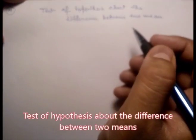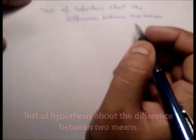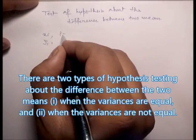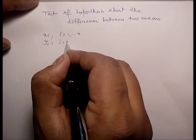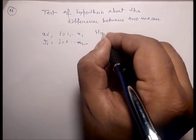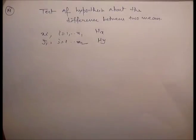Test of hypothesis about the difference between two means. Suppose we want to test if two independent samples xi and yj, where i equals 1 to n1 and j equals 1 to n2, of sizes n1 and n2 have been drawn from two normal populations with means mu_x and mu_y respectively, under the null hypothesis that the samples have been drawn from normal populations.